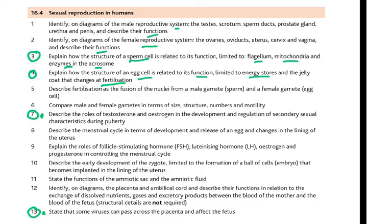Describe fertilization as a fusion of the nuclei — only the nucleus from the male gamete and the female gamete cell fuses. Then compare male and female gametes in terms of size, structure, numbers, and motility. This is also from the old syllabus. New in the syllabus is point 7: describe the role of testosterone and estrogen in the development and regulation of secondary sexual characteristics during puberty.